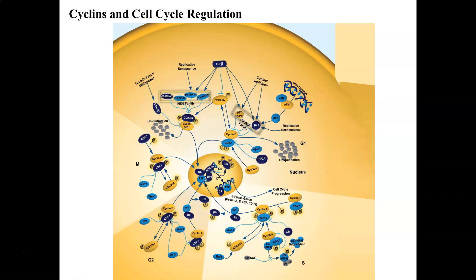Because cyclins drive the cell cycle, overexpression of cyclin proteins has been shown to actually lead to causing cancers. For example, cyclin-D has been associated with breast cancers and esophageal cancers, because overexpression of a protein that drives you through the cell cycle is going to cause cells to divide uncontrollably.